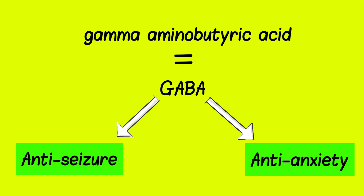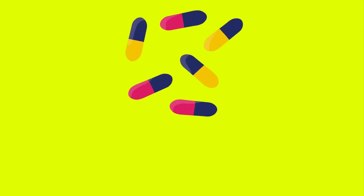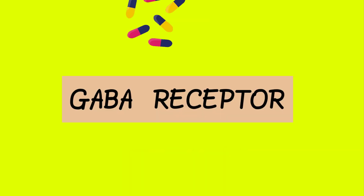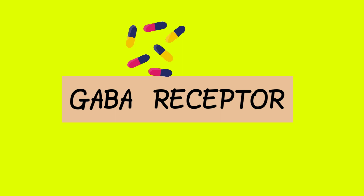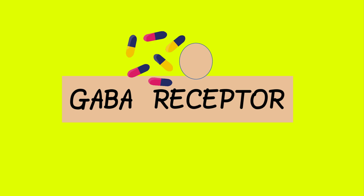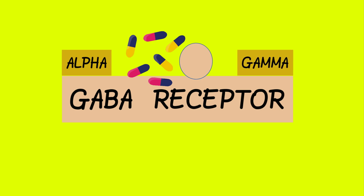On the other hand, diazepam belongs to a class of drugs called benzodiazepines. Diazepam acts on the GABA receptor and facilitates the binding of GABA to its receptor by specifically binding to an interface between the alpha and gamma subunits in the receptor.